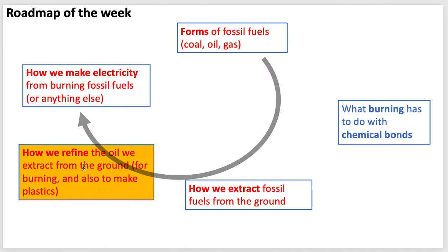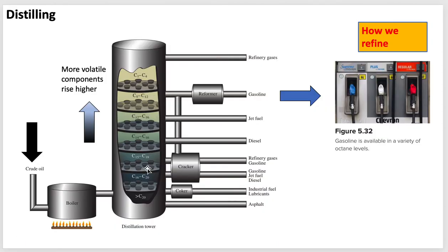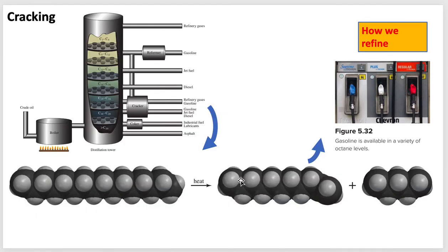How do we refine the oil we get out of the ground? I want to draw your attention to the distillation column on a large refinery. Here's a schematic: crude oil comes in, gets heated up, and in these columns the more volatile components like methane and ethane rise higher. You pull those gases off the top. For things like octane you pull off lower in the column, and the really heavy components come off the bottom. If you want more octane but have a lot of longer hydrocarbons, you can pull them off at that level and do what's called cracking, which breaks them into smaller pieces.